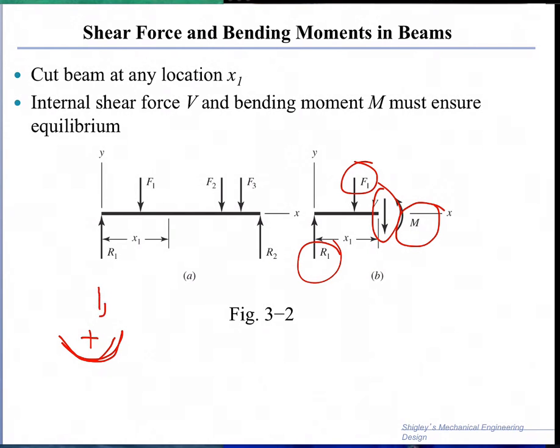A negative moment will have a curvature of the beam in that fashion, so this is negative and this is positive.